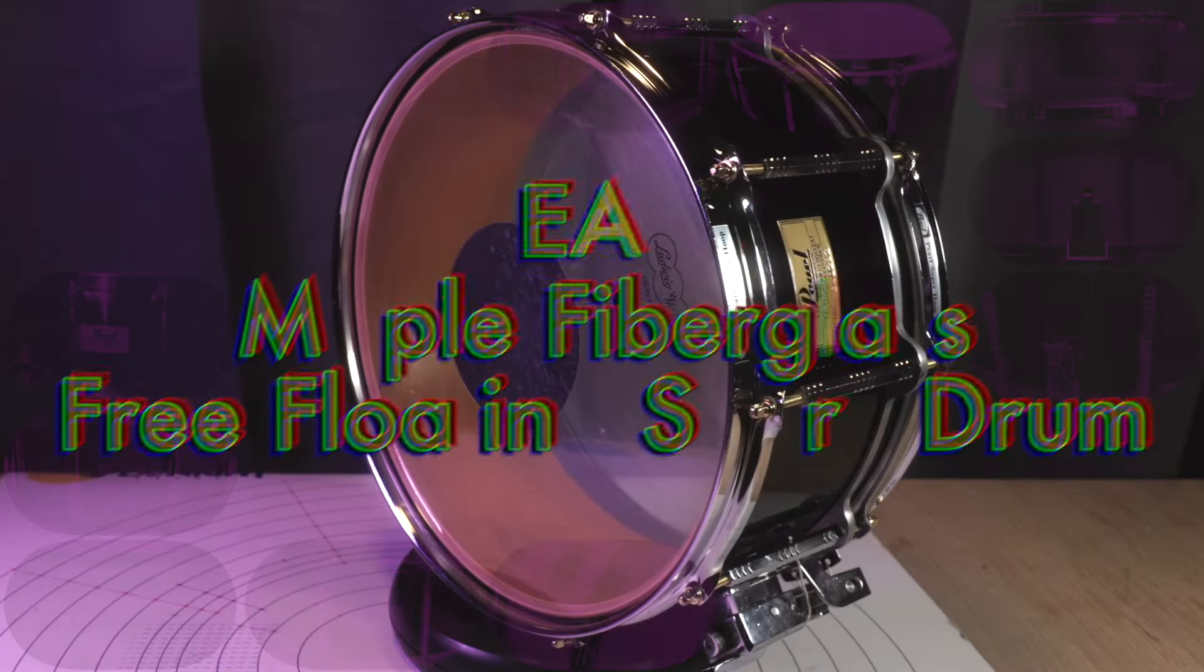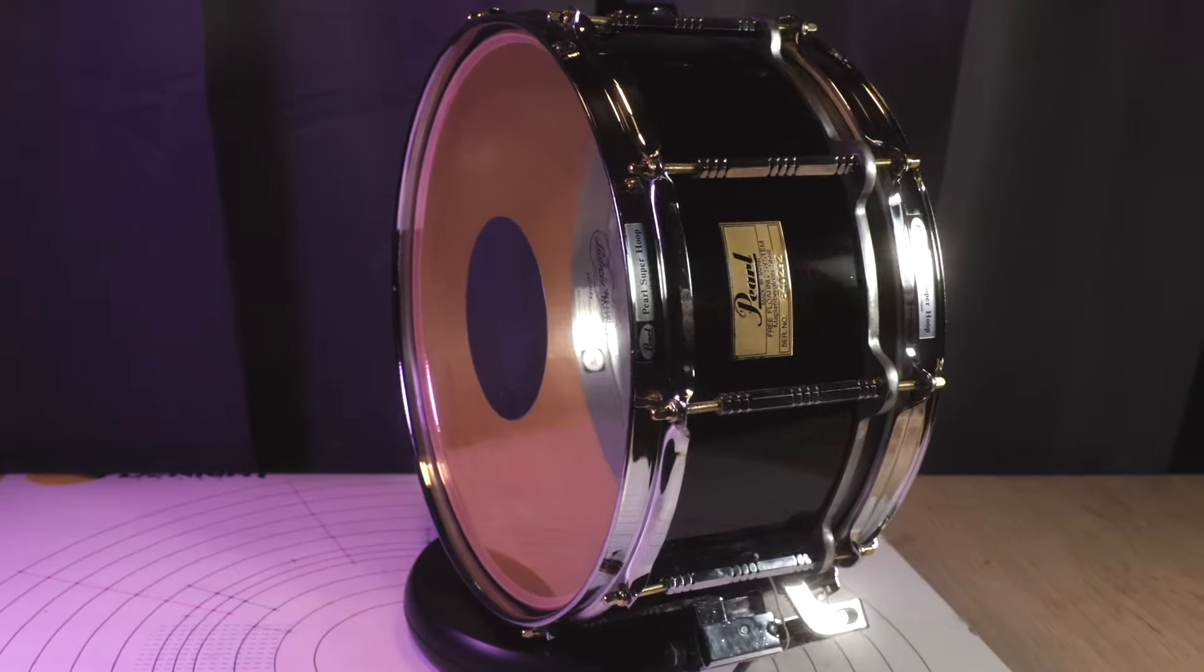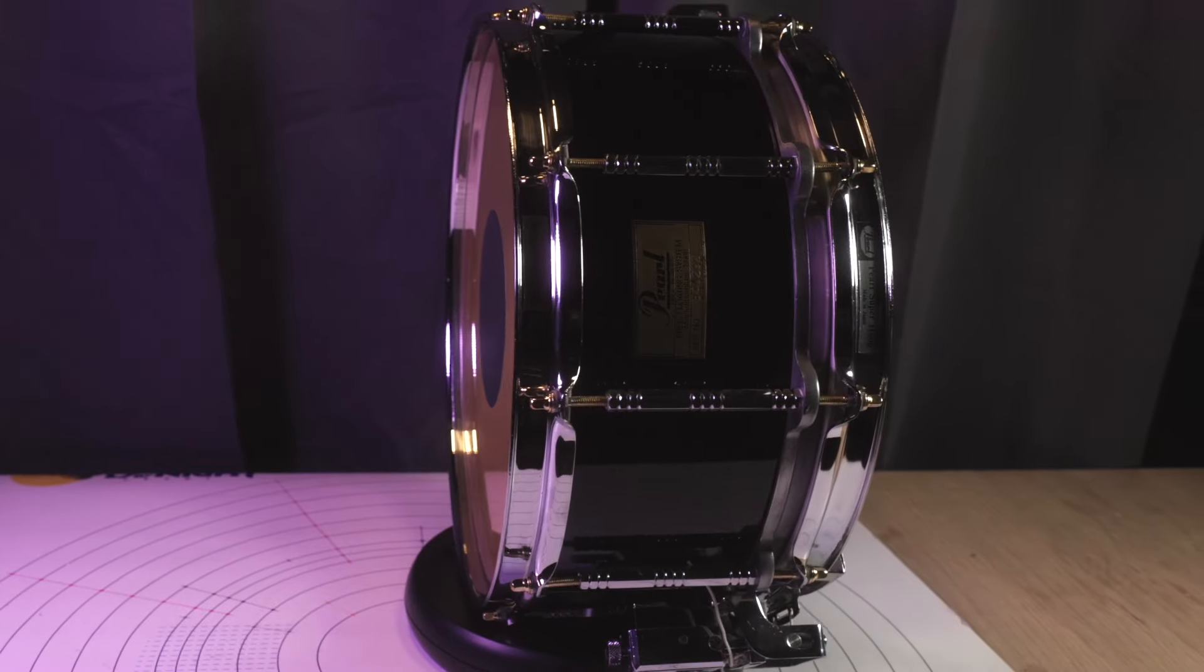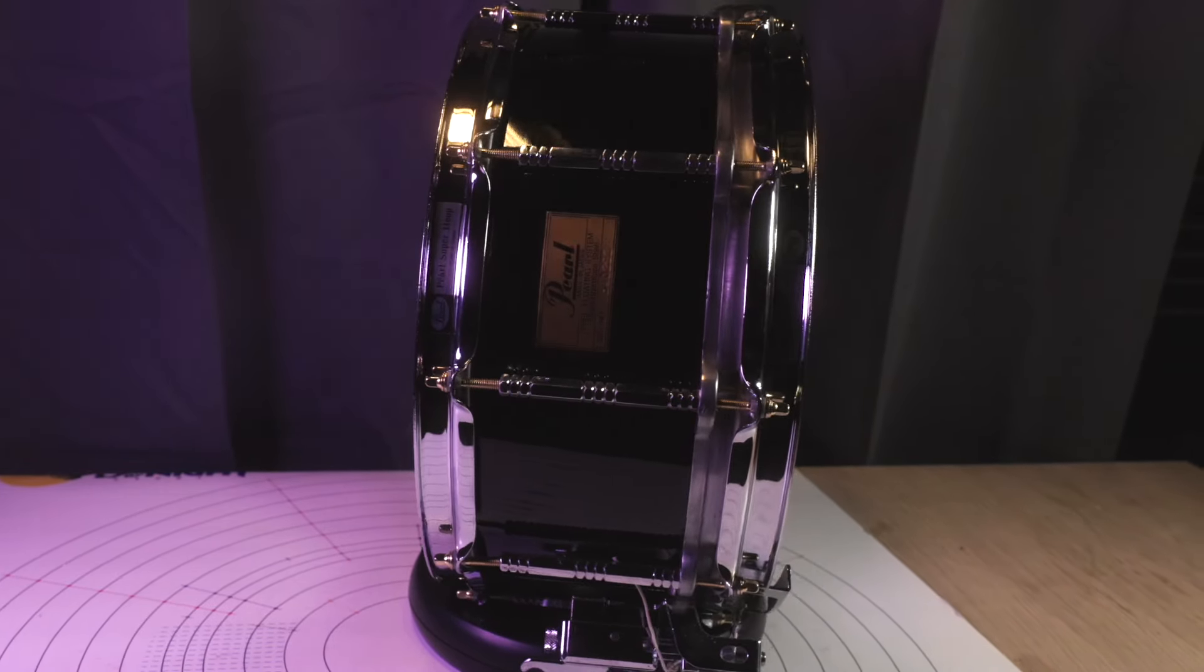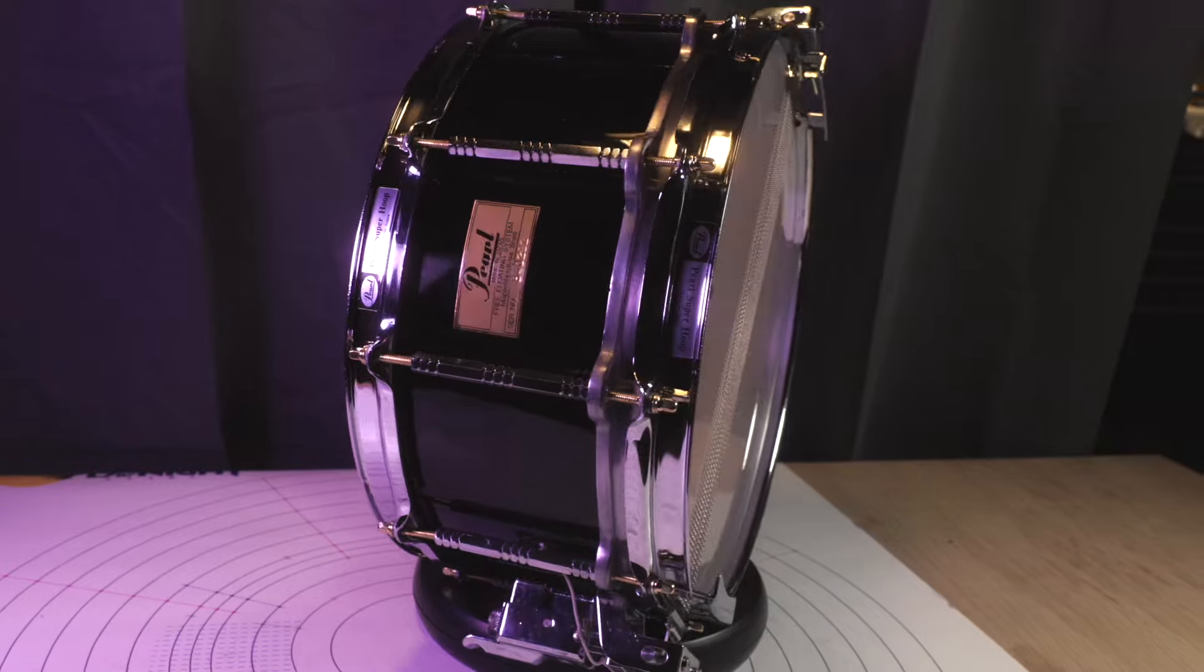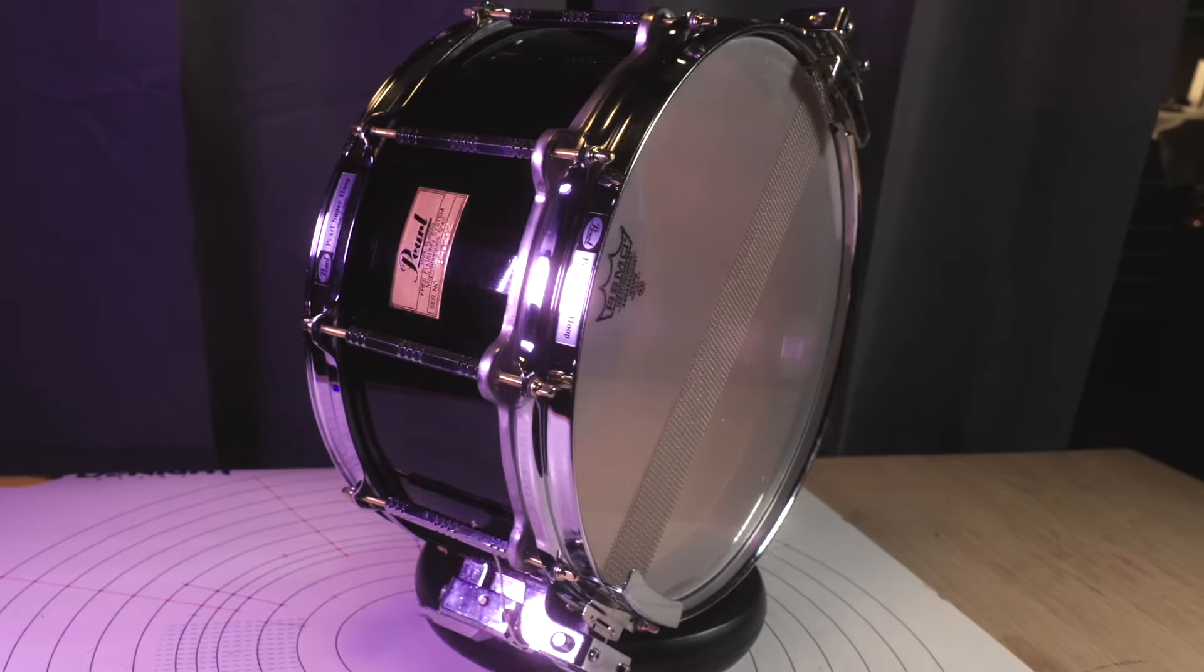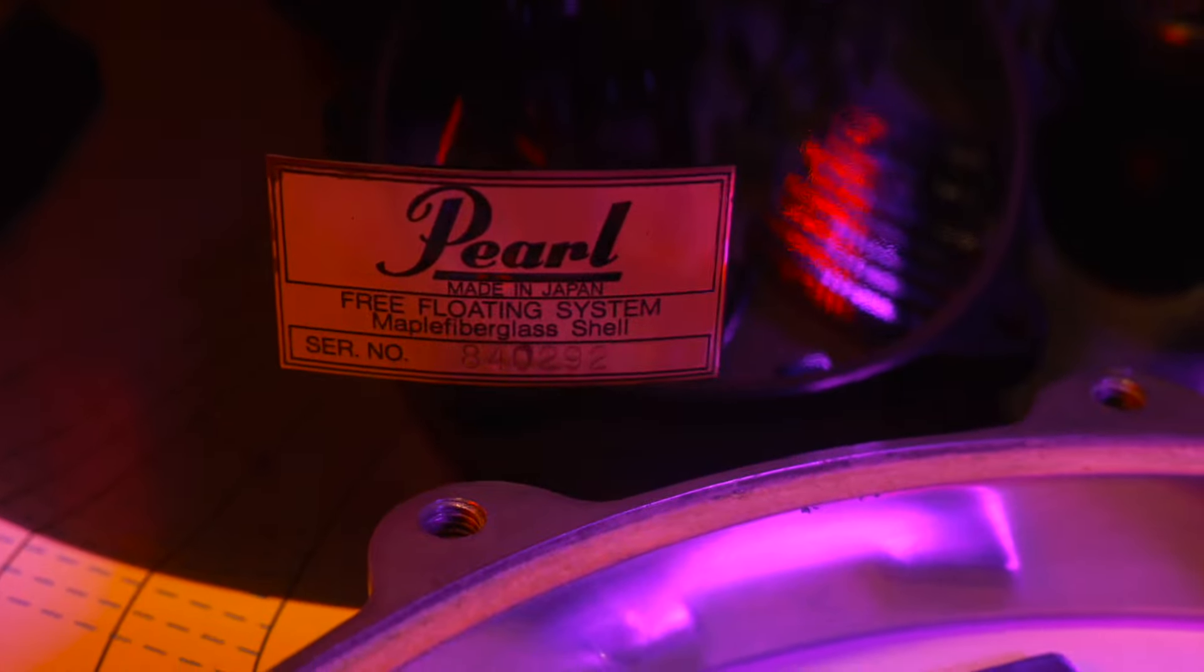Okay, today you're looking at a Japanese handmade snare drum, six and a half by fourteen inch maple fiberglass shell with free floater hardware in piano black lacquer. This model was built in Japan and is one of the very first to go into production.